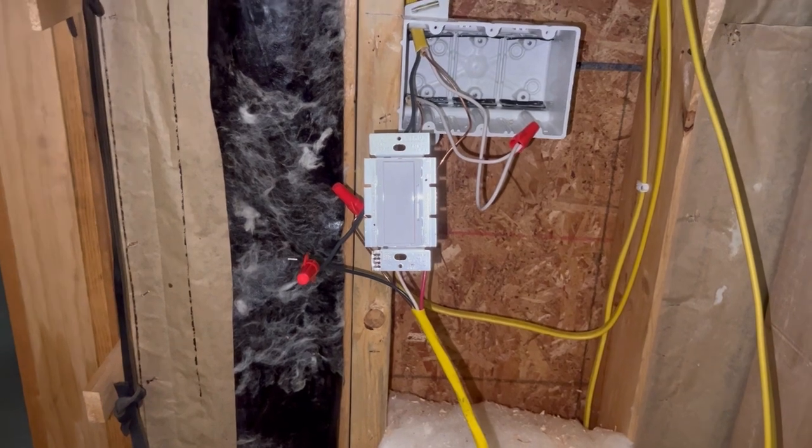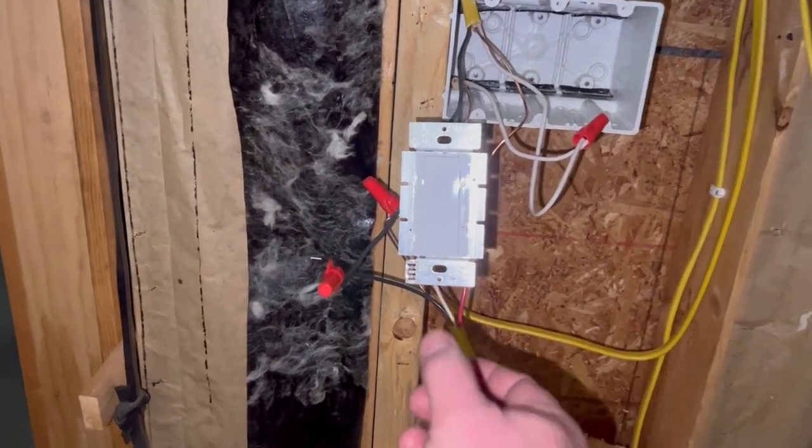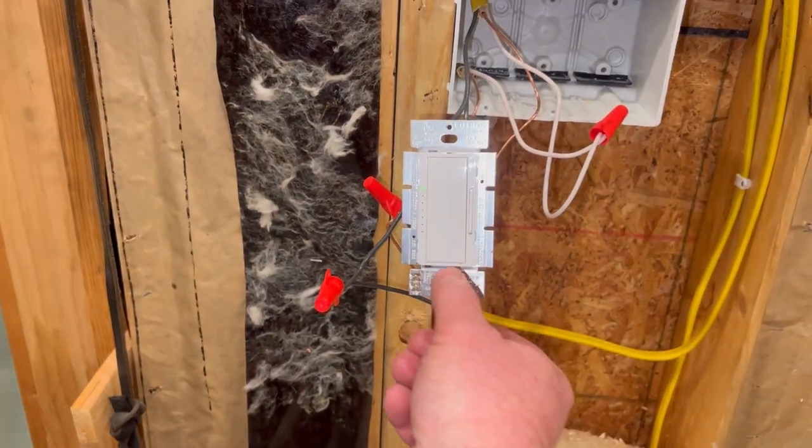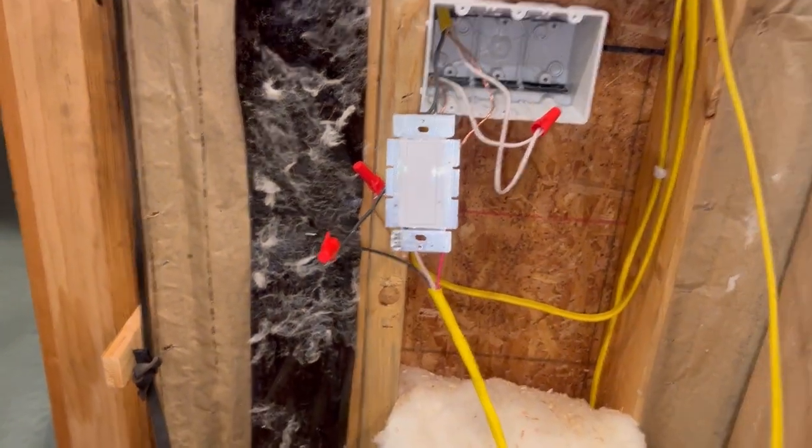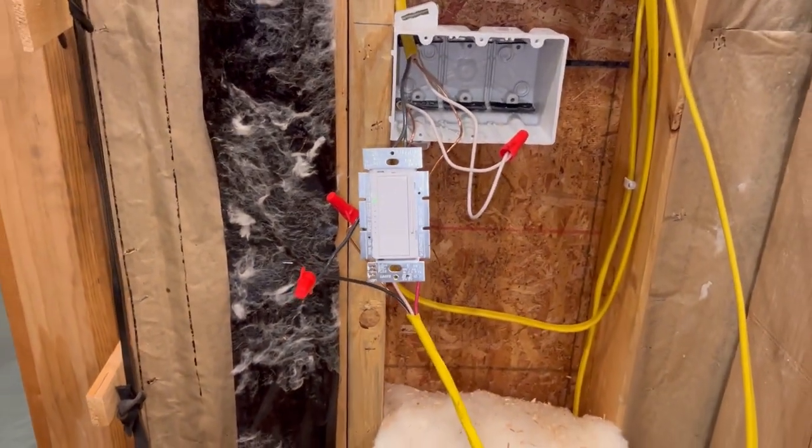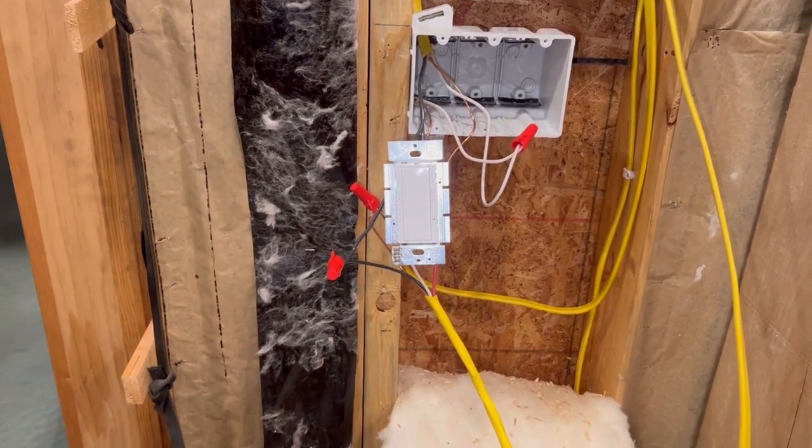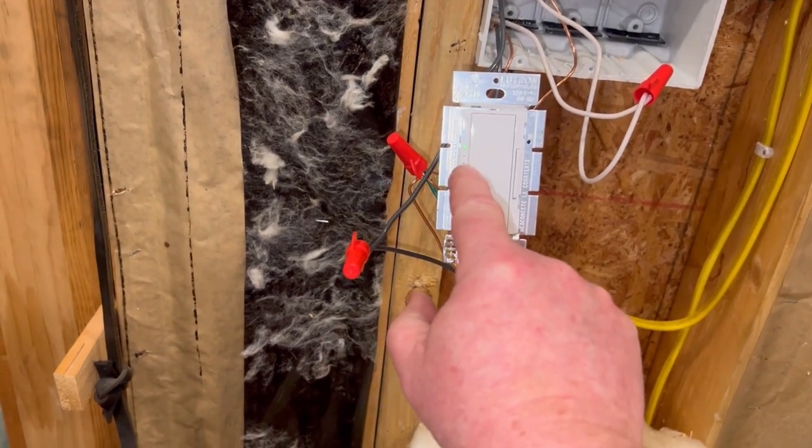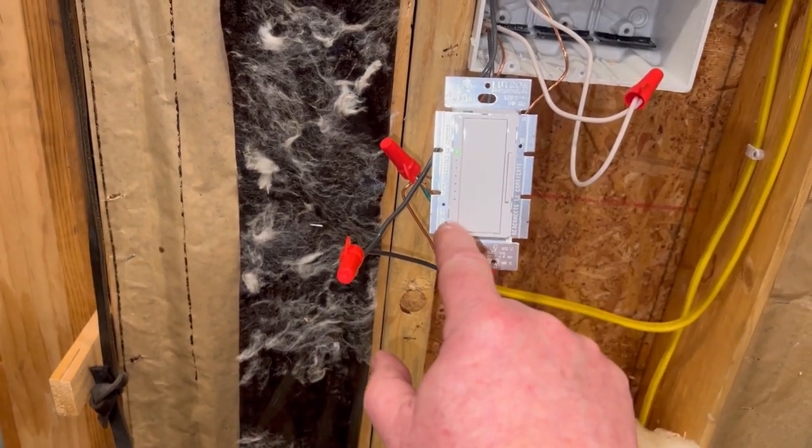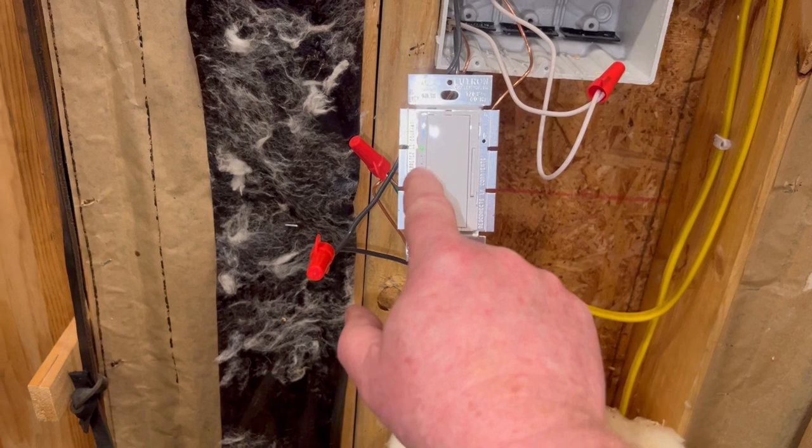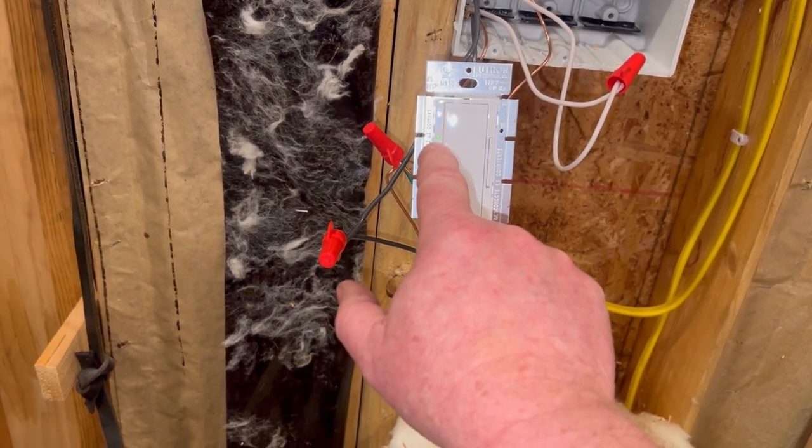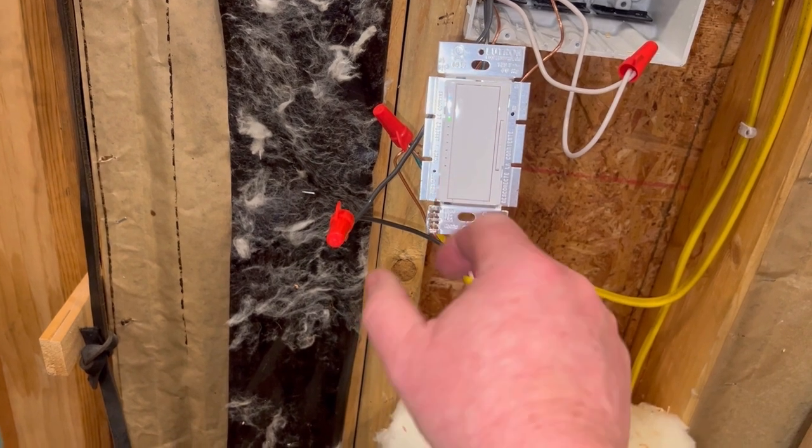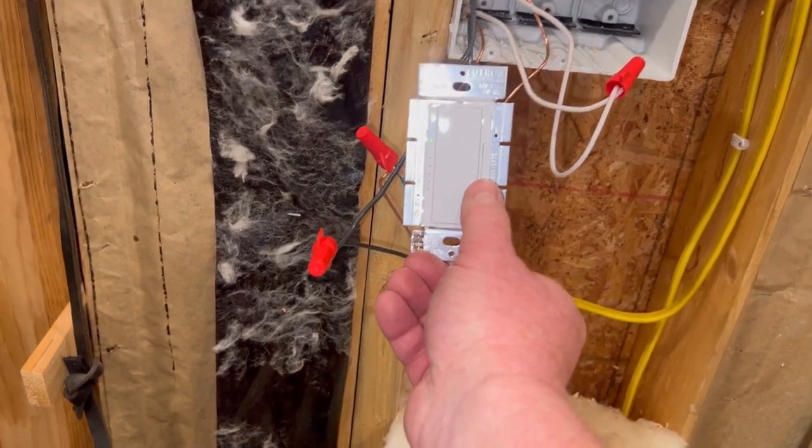And let's see if we can tap the first switch here. Yep, the lights come on. Hopefully you can see that on the camera. The lights are coming on. Notice the LED indicators on the left hand side of this main switch. You can see that the top LED is lit, meaning that it's at full power. So if I hit the dimmer...